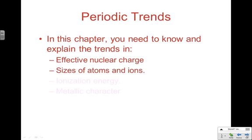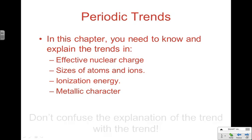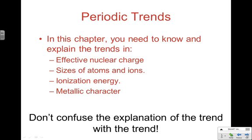In the chapter, you're going to need to know and be able to explain trends in effective nuclear charge — also called effective nuclear strength — the sizes of atoms and ions (both what the trends are and why), ionization energy, metallic character, and we'll also mention electronegativity, which hopefully you'll remember from pre-AP chemistry.